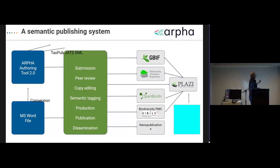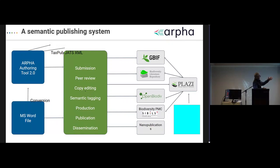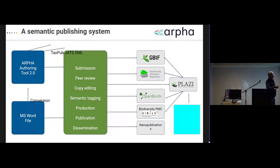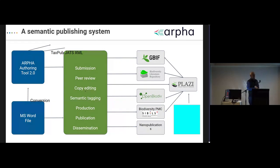This is how the semantic publishing system looks: on one side, publishers like Pensoft publish new information either through the ARPHA writing tool or through MS Word files, then it passes through editorial processing, copy editing, and publication. The content is then distributed through different aggregators. On the other side, the same process is provided by Plazi — they extract legacy data and put it into the same aggregators, meaning legacy content and newly published content come together in one place, with nanopublications as an important element of all this.